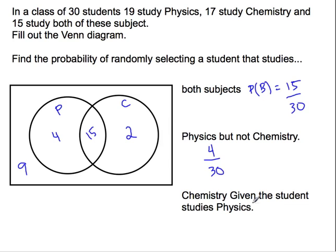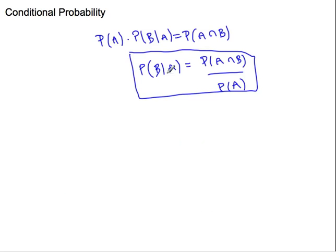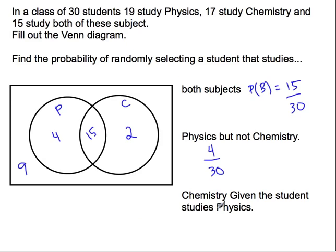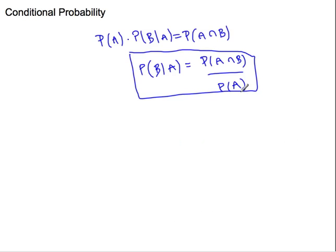All right, now here's the conditional part. The chemistry, given that a student studies physics. Okay, well let's look back at our formula here. Given they study physics. So that's the given part right here, probability of A. So what's the denominator, Mr. Rops? It's going to be the probability of, or the number of, given the physics people. So given physics, do we need the probability piece? No, we just need the number. We're going to need the total kind of thing. So there's 19 that are taking physics.